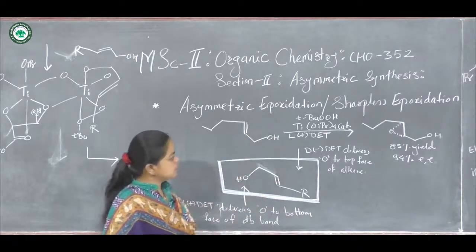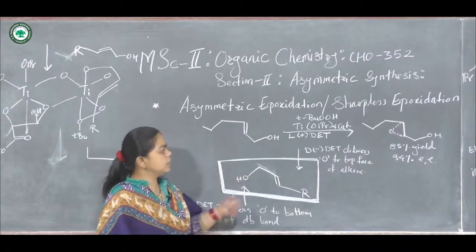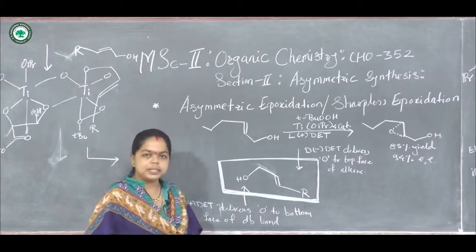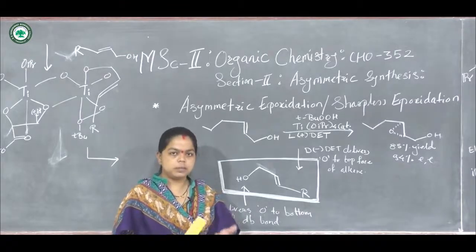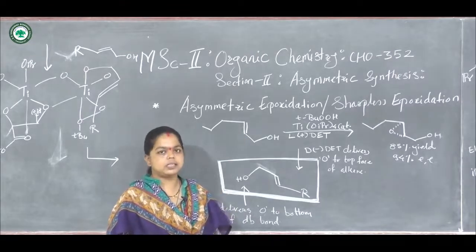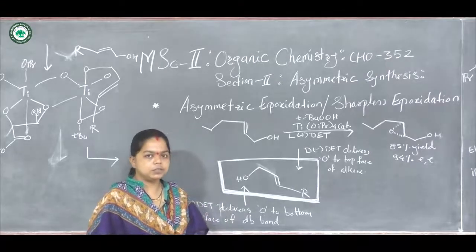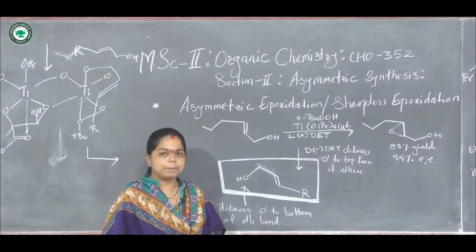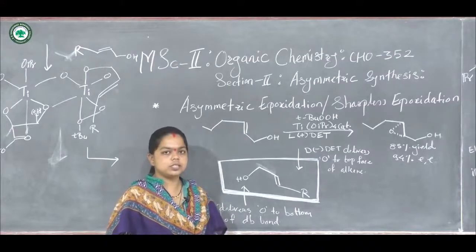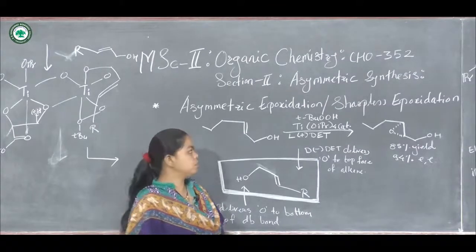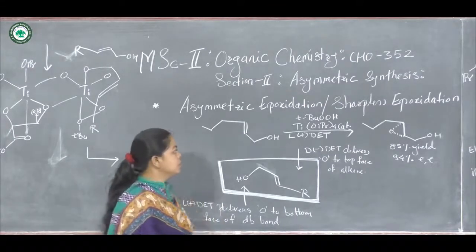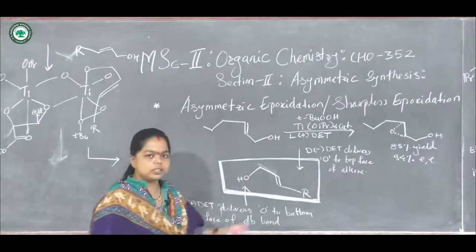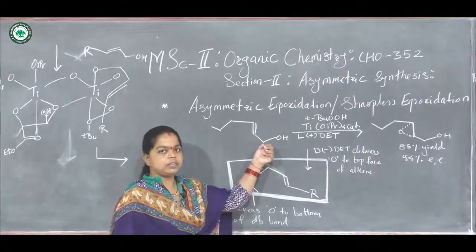Let us see the general reaction first. This is asymmetric epoxidation — the double bond is accessible only for allylic alcohol compounds, which can show this type of asymmetric epoxidation. The allylic alcohol is the substrate given here.